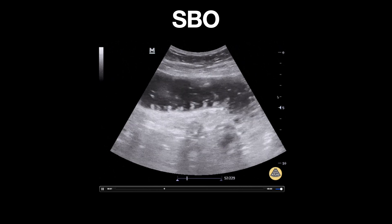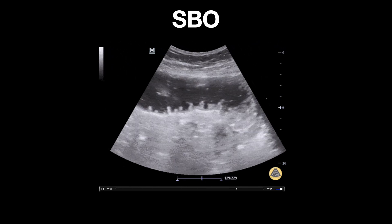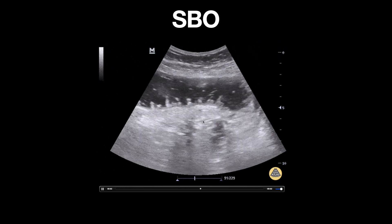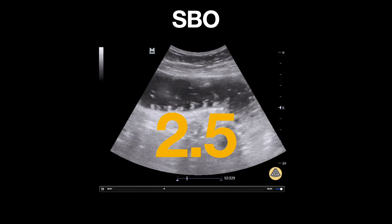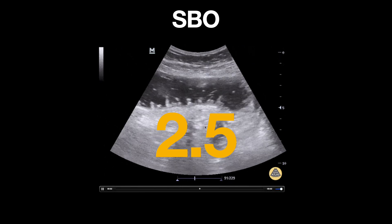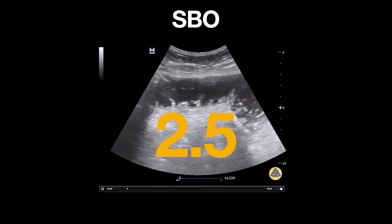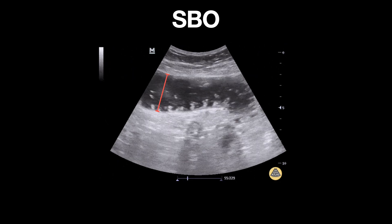Several findings in this clip clue us in that this is a small bowel obstruction. First, we can see that the small bowel is dilated. Remember 2.5 centimeters — this is the cutoff of normal bowel size. You should measure perpendicular to the lumen of the small bowel when evaluating from wall to wall.